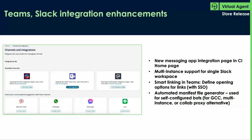Teams and Slack integration enhancements. We have a brand new messaging app integration page that's part of the conversational interfaces homepage. For Slack users, we now have multi-instance support for a single Slack workspace, so you can connect multiple services and instances to a single workspace. We have smart linking in Teams — in Tokyo we had smart linking in web, and we've now expanded that to Microsoft Teams. You can define opening options for links when you click on a link in Teams in the virtual integration.